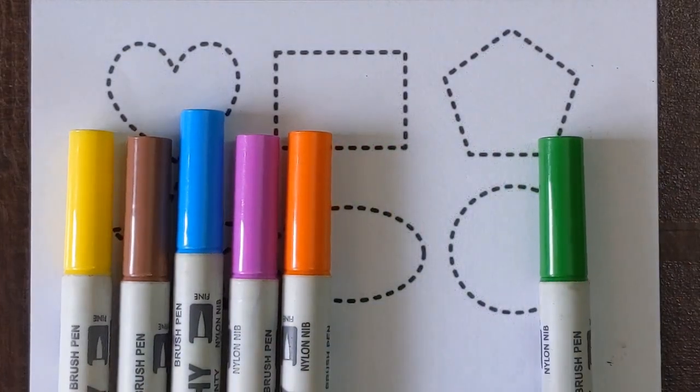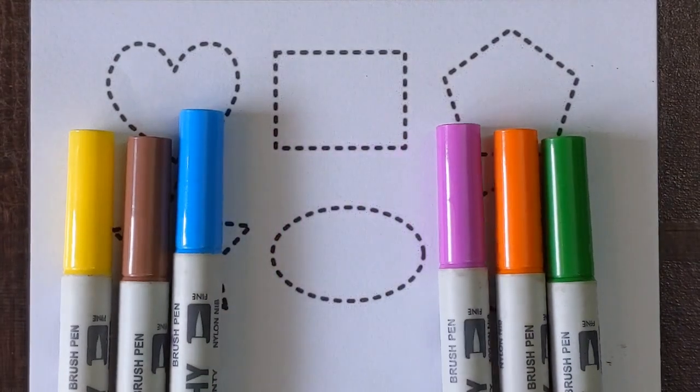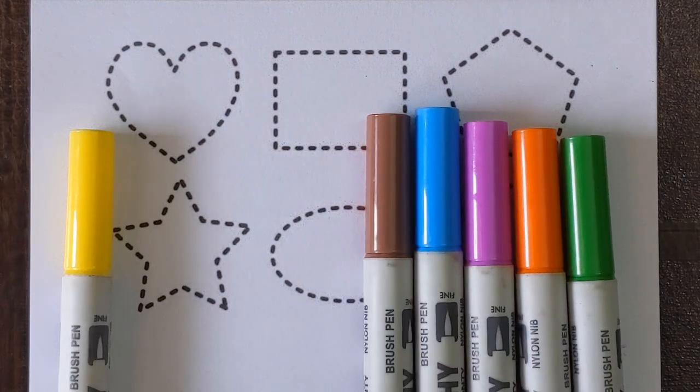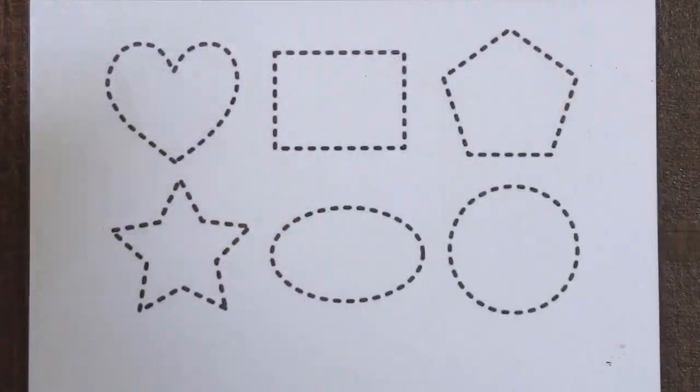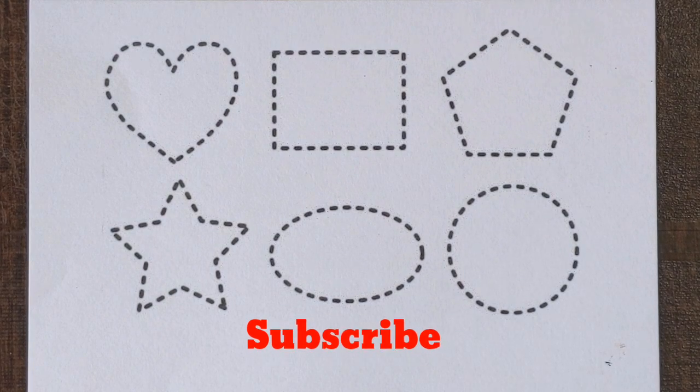It's a light green color, orange color, purple color, sky blue color, it's a brown color and yellow color. Today we are going to draw some 2D shapes and we will color them.